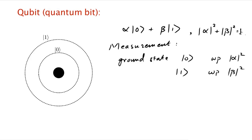The second thing worth noting is that the electron has a complicated superposition state only as long as you don't look at it. As soon as you look at it, it's either in the ground state or the excited state. Think about the amount of information it takes to specify the state of the electron when you're not looking — you have to specify two complex numbers, which is an infinite number of bits of information. It's a very complicated state describing the electron when unobserved. But nature presents a very simple face when you actually look at it: it just pretends to be a very simple system, either ground or excited, representable by a single bit.